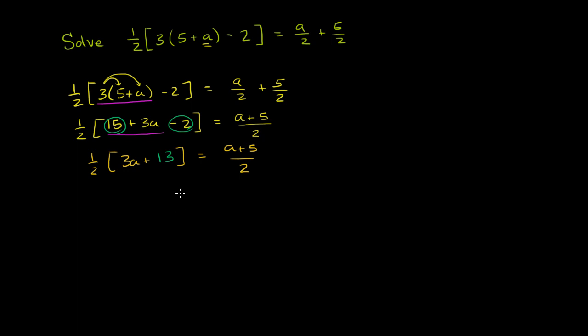Now there's a bunch of ways you could go. You could distribute the 1 half times both of these terms, but there's maybe a clearer simplifying step. We could have done this right from the get go. We can just multiply both sides of this equation by 2 in order to get rid of this 2 in the denominator. If I multiply the left hand by 2, I have to also multiply the right hand by 2. Then 2 times 1 half is just 1. a plus 5 over 2 times 2 is just a plus 5. We're just left with 3a plus 13 is equal to a plus 5.